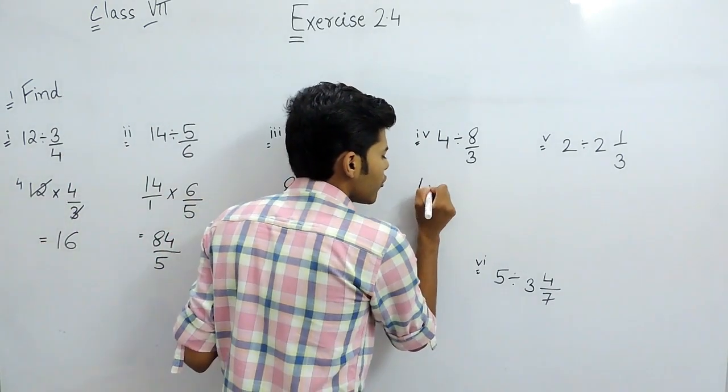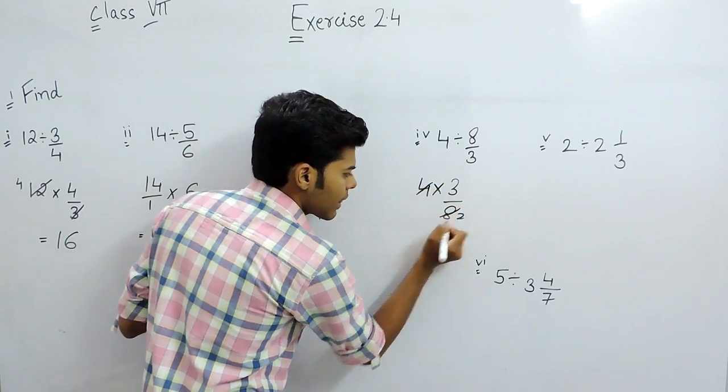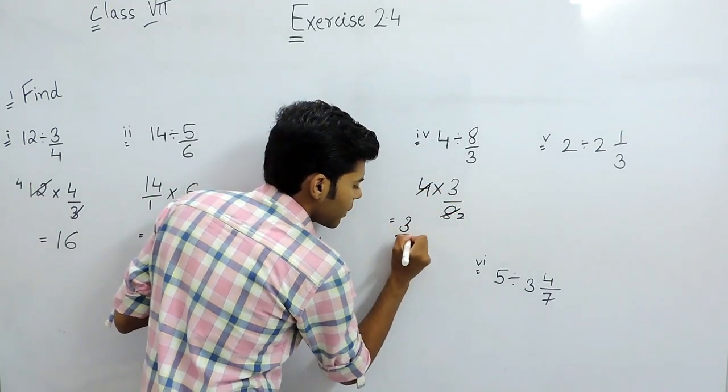In this part also, 4 multiplied with 3 by 8, 4 divided by 2, and that will be 3 by 2.